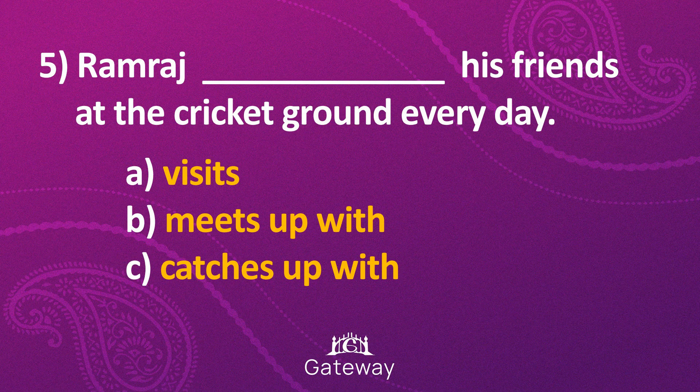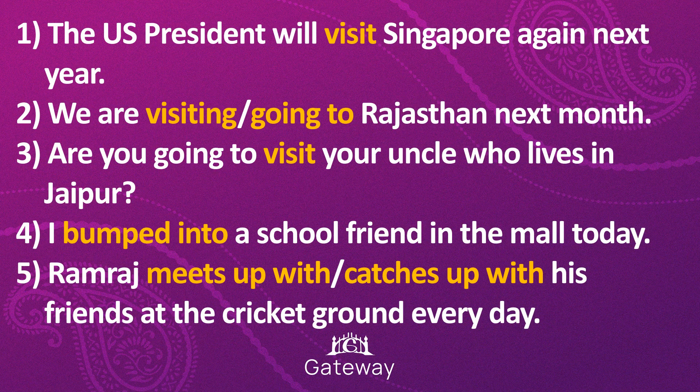Number five: 'Ramraj — (a) visits, (b) meets up with, or (c) catches up with — his friends at the cricket ground every day.' If you chose (b) 'meets up with' or (c) 'catches up with,' then you chose the right answer. We can use both of these for this daily activity. That's all for today's lesson. Have a great day, be sure to subscribe, and see you next time. Bye for now.